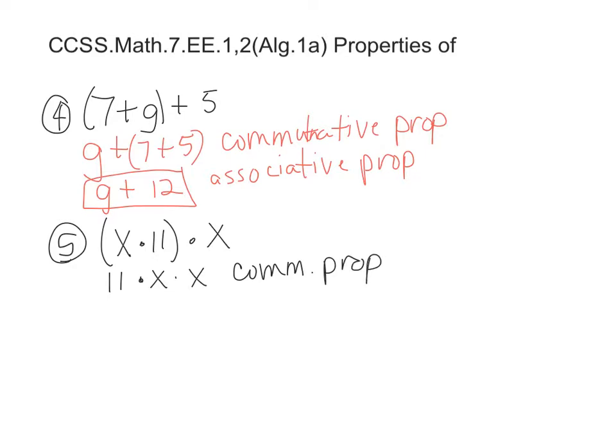Now we can group them together. That would be 11 times x times x. That is associative if we're grouping, associative property.